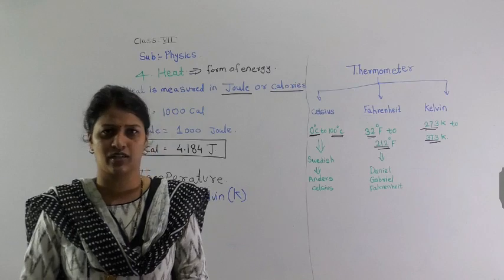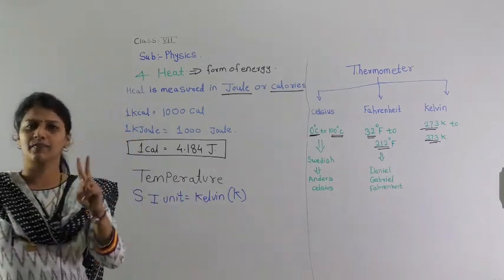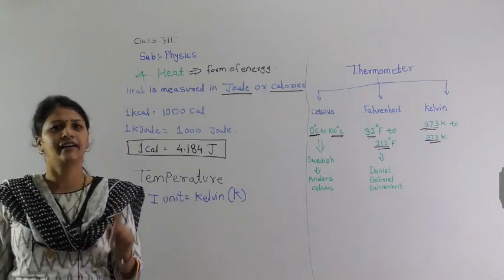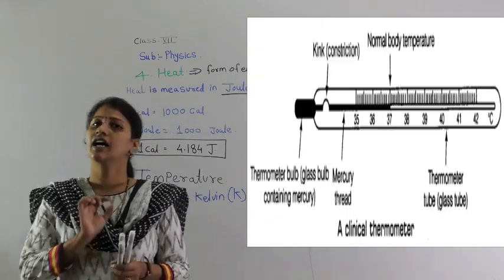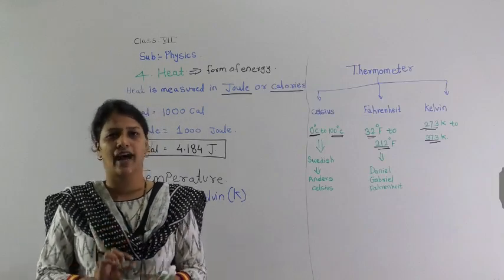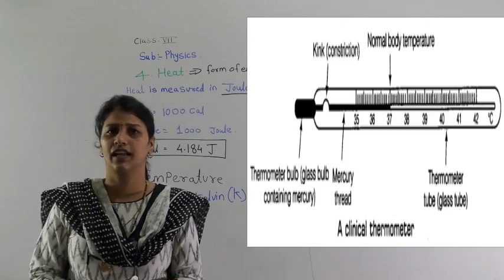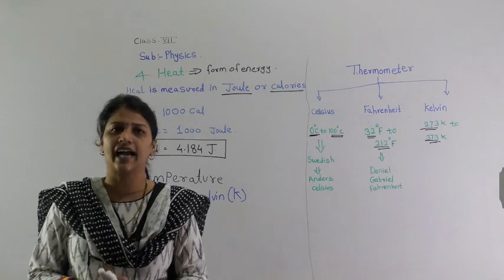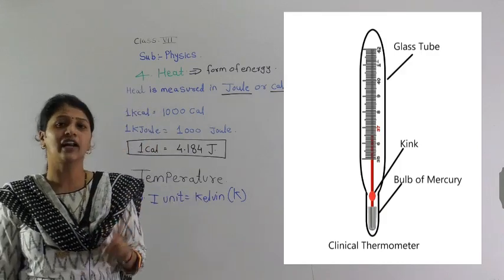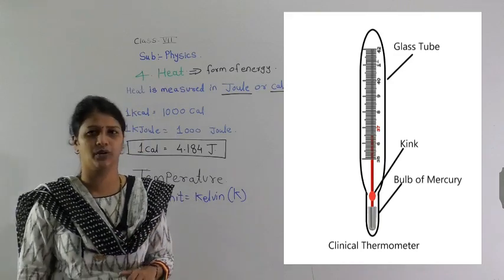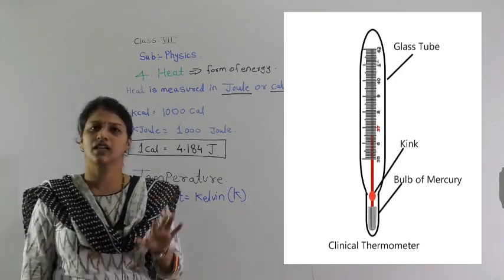There are mainly two types of thermometers given in your textbook: clinical thermometers and laboratory thermometers. The construction of both is the same — they are made of glass with a capillary tube filled with mercury or alcohol.